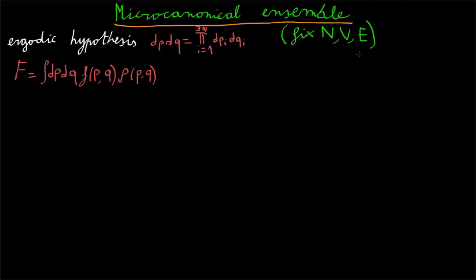we will need the ergodic hypothesis, which is the hypothesis that we can describe a thermodynamical observable, capital F, as an average over a distribution, rho, of a dynamical variable, lowercase f.